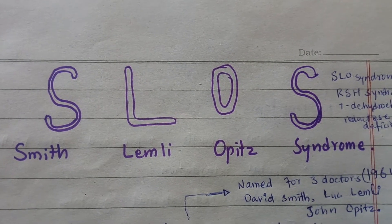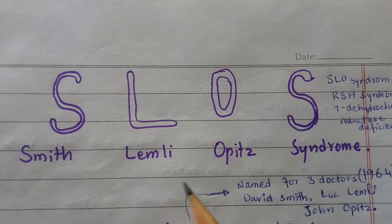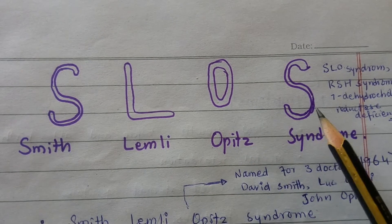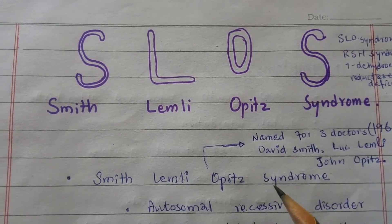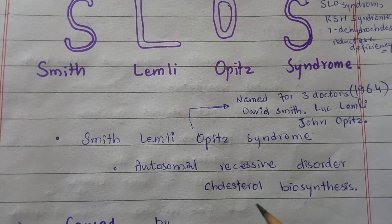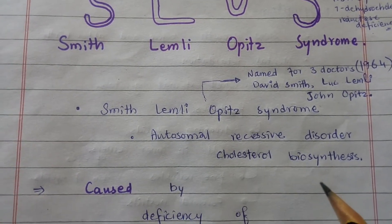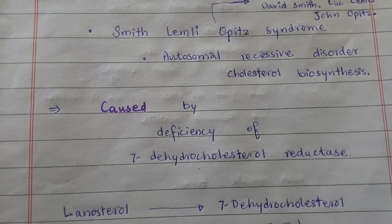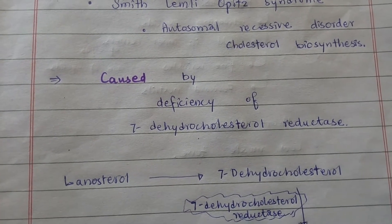In this video I will discuss the Smith-Lemli-Opitz syndrome (SLOS). SLOS is an autosomal recessive disorder of cholesterol biosynthesis, caused by the deficiency of the enzyme 7-dehydrocholesterol reductase, which results in abnormality in cholesterol metabolism.